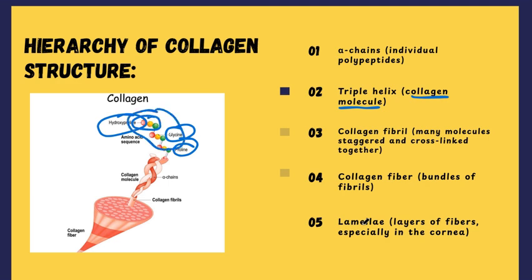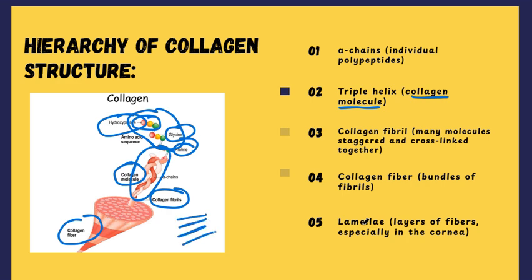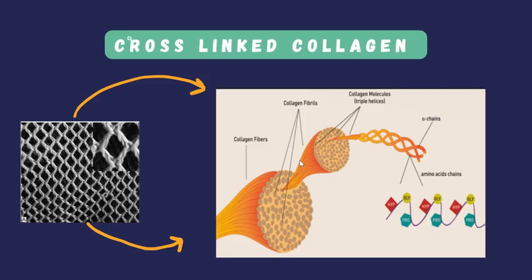These collagen fibrils bundle together to form collagen fibers, enhancing structural integrity. Finally, these fibers are organized into layers — the lamellae — in the cornea. These layers are stacked and arranged in a highly ordered manner to maintain transparency while resisting mechanical stress.